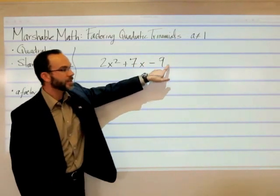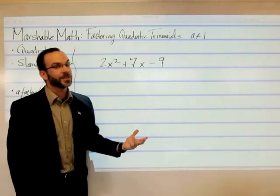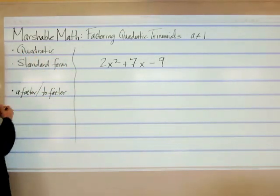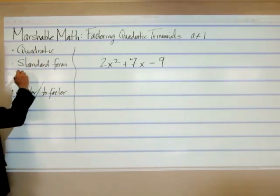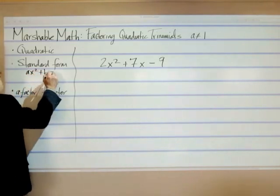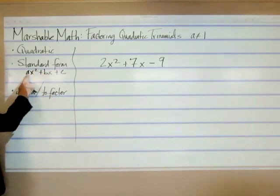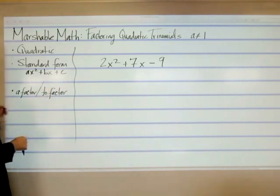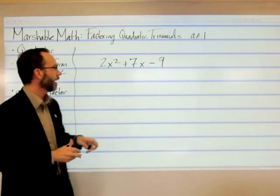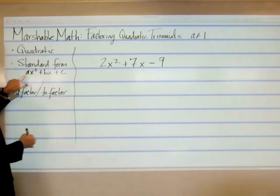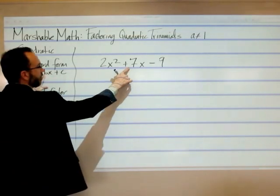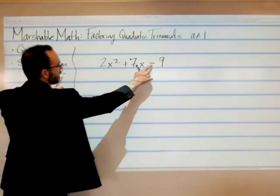This last one has no x, or you can think of it as x to the zero power. Oftentimes we have standard form written like this, just as a general reminder: Ax squared plus bx plus c, where a, b, and c are just the coefficients. So in this case we can say that a is positive 2, b is positive 7, and c is negative 9.